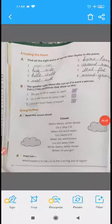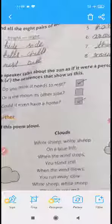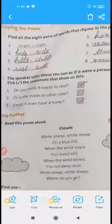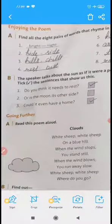Yes, you can see this is part B. The speaker talks about the sun as if it were a person. Tick the sentences that show us this. What does the speaker tell you that the sun is a person? The sun is a person that shows the quality of the sun.